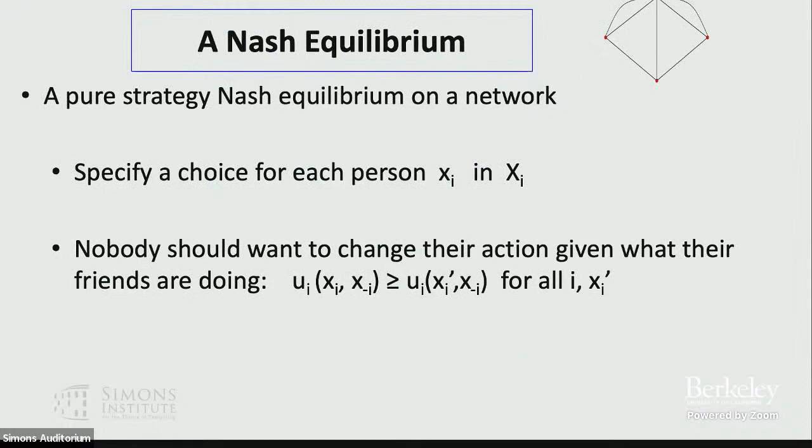A Nash equilibrium in this game: people are making zero-one choices. Each person has an action space — either zero or one — and gets a payoff based on their own action and the actions of others. A Nash equilibrium is a point where we specify what everybody does, and each person is making the best possible choice given the choices of others. Their payoff from their current action is at least as good as they'd get from changing their decision.